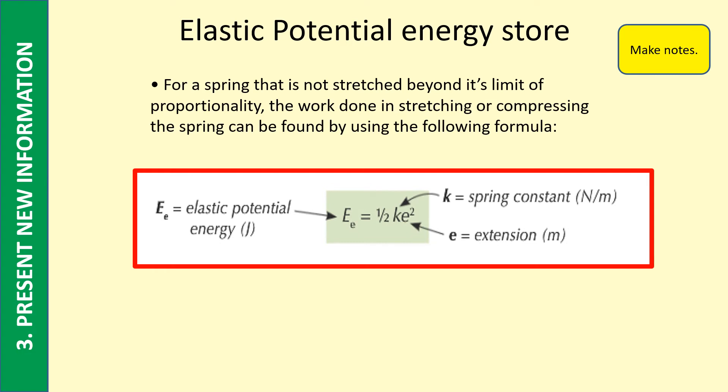There are two ways to work out how much elastic potential energy is stored in a stretched spring. This is the first method using this formula: E equals a half k e squared. Now you need to know what each term is and you need to know what the units for each term are. So E is the elastic potential energy measured, as all energies are, in joules, and we came across this when we did our first topic on energy.